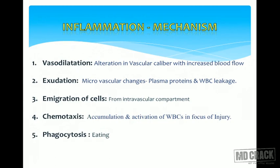Let us see what mechanisms are involved in the inflammatory process. The first and foremost event is vasodilatation — alteration in vascular caliber with increased blood flow. Any inflamed area shows an increased amount of blood due to increased vascular permeability. Then there is exudation, where microvascular changes take place, leakage of plasma proteins, and cells leak from the intravascular to the extravascular compartment. More WBCs accumulate, and emigration of cells occurs via chemotaxis — the accumulation and activation of WBCs toward the site of injury — with the main intention being phagocytosis of the microbe.